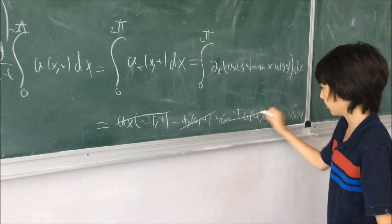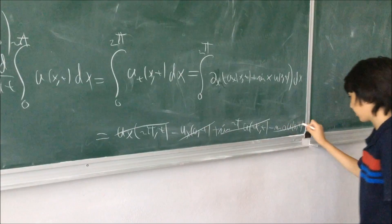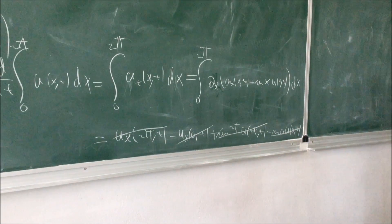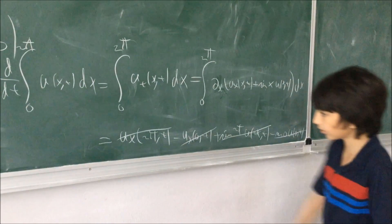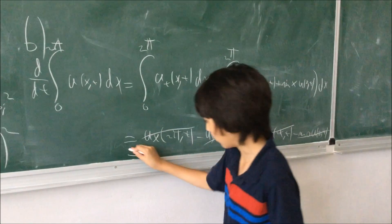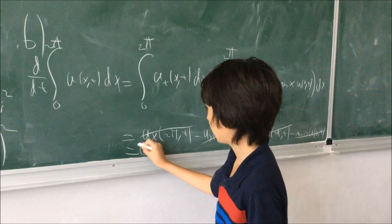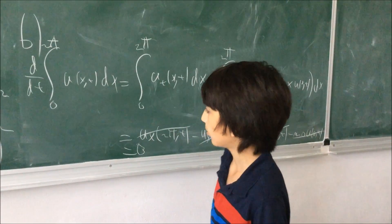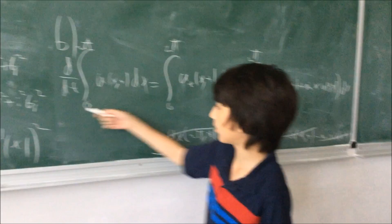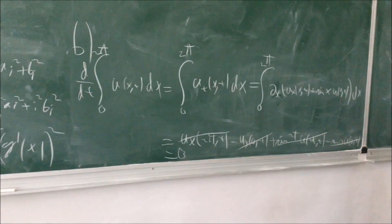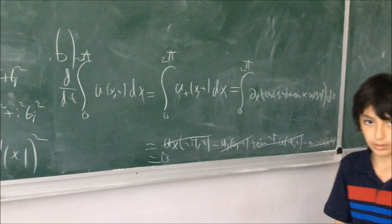This term is zero. Sine of two pi of x is also zero. Sine of zero. And this means this is constant. So, we're done with part B.